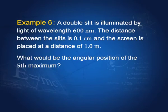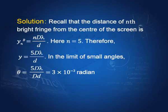This also corresponds to what is done in the laboratory: the wavelength, the slit-to-screen distance, and the slit separation are all given. One then measures the distance of the nth bright fringe from the center to find the wavelength, or if the wavelength is known, one finds the angle θ between the center and the fringe position.